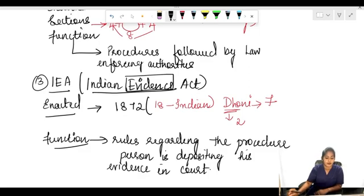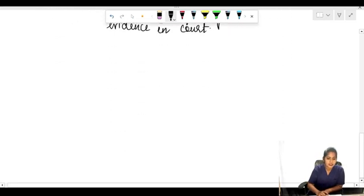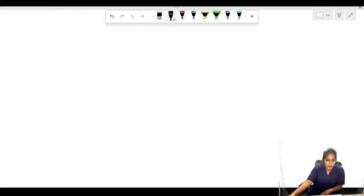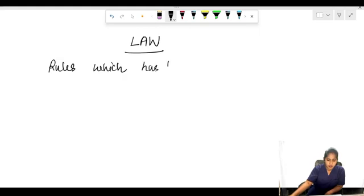These are the basic codes which we have to know in law. Next is, most of us will know about this, but there will be a little bit confusion. What is a law? Law is nothing but a rule which is being made in a state or a country.